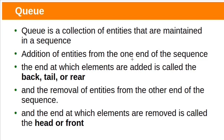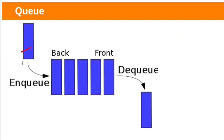It enqueues entities from one end of the sequence. The end used to add elements is called Rear, Tail, or also called Back. The queue removes entities from the other end of the sequence. The end used to remove elements is called Head or Front. New elements will be added at the Rear or back of the queue, and deletion of elements will be done at the front.